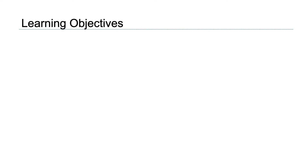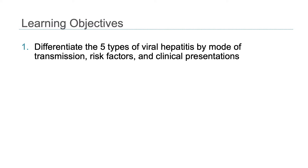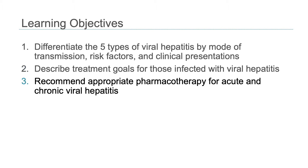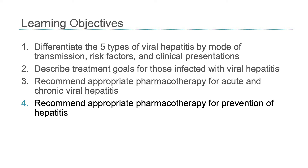I hope to achieve four objectives today. First, to differentiate the five types of viral hepatitis by mode of transmission, risk factors and clinical presentations. Second, to describe the treatment goals for those infected with viral hepatitis. Thirdly, to recommend appropriate pharmacotherapy for acute and chronic viral hepatitis. Fourth, to recommend appropriate pharmacotherapy for the prevention of hepatitis.